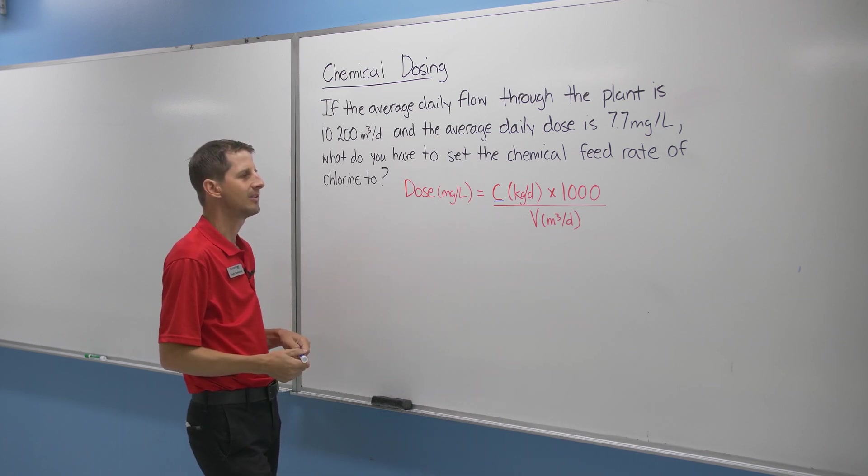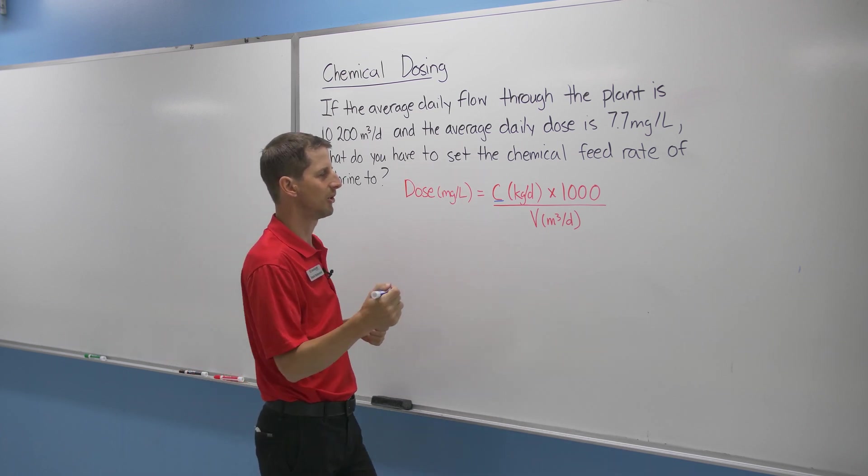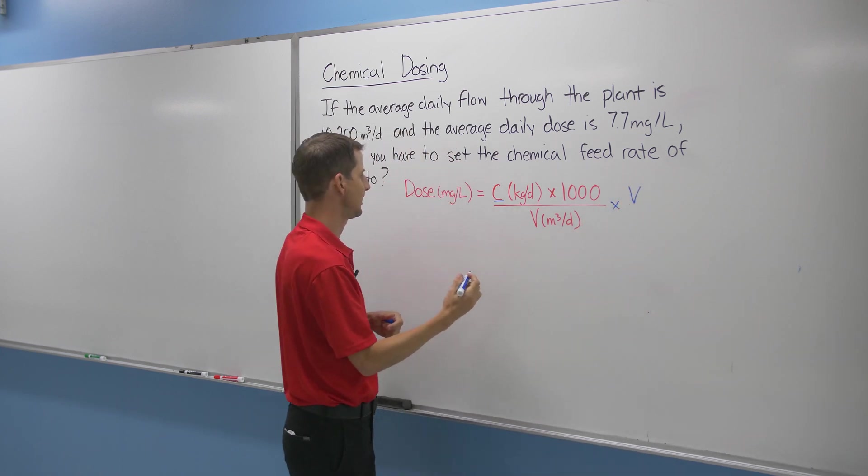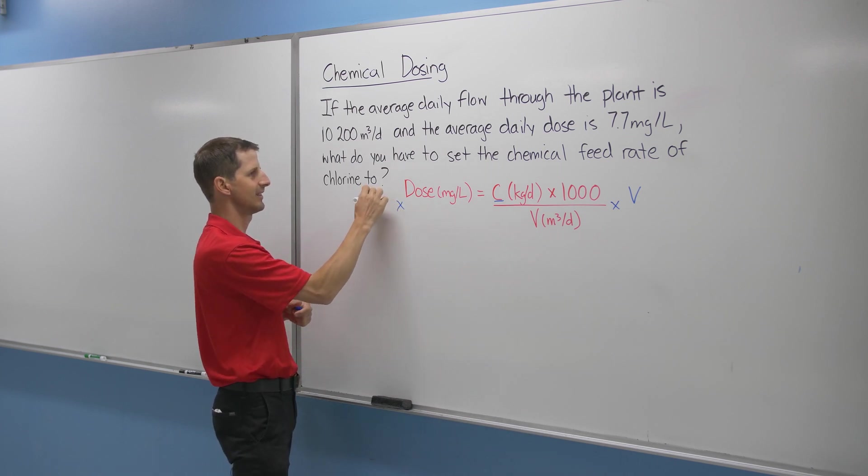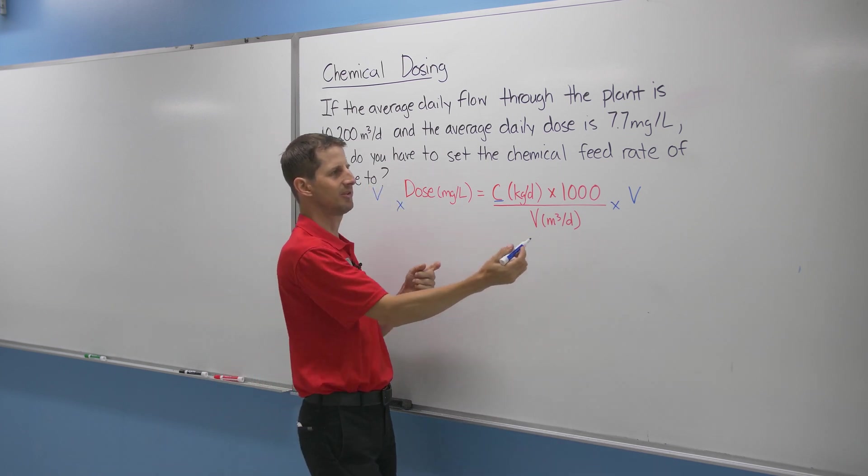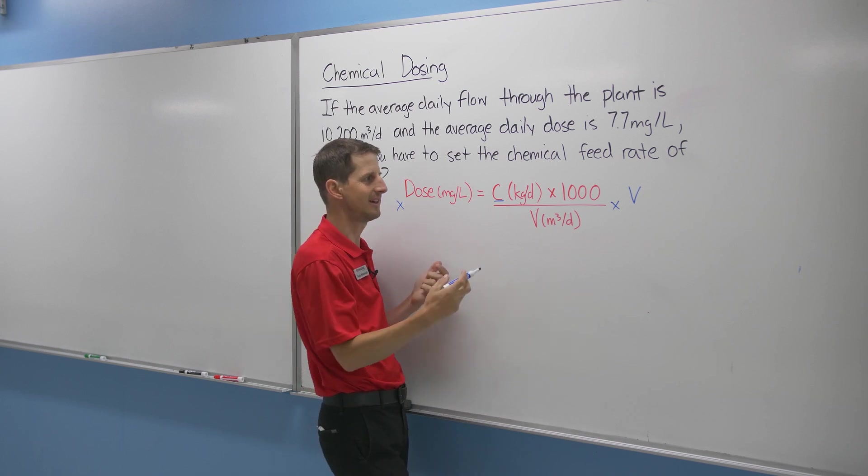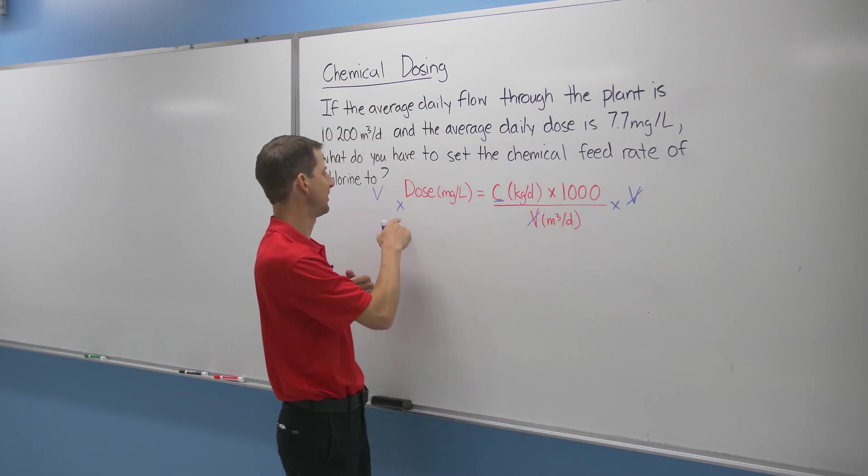How do we do that? So one method is to multiply both sides by a value. If I multiply this side by a V, and I multiply this side by a V, then what happens to units that are the same on the top and the bottom? They cancel out, right? So we can get rid of the V and get rid of the V. So now it's up here.